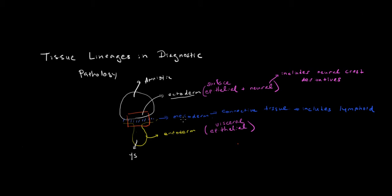And so, if we imagine this is the amniotic cavity and this is the yolk sac, there are these layers that form in between. The top layer, we'll term ectoderm, the middle layer, mesoderm, and the bottom layer, endoderm.